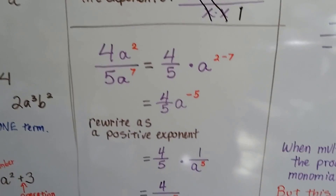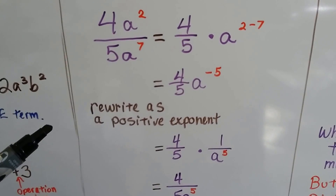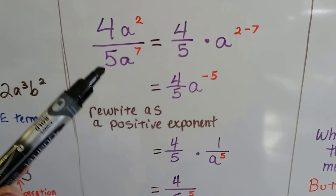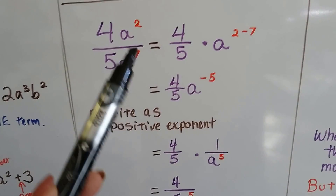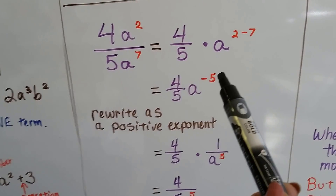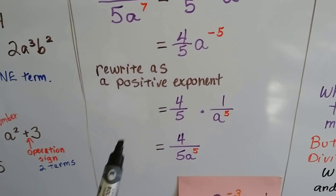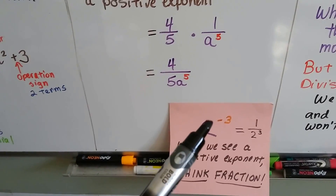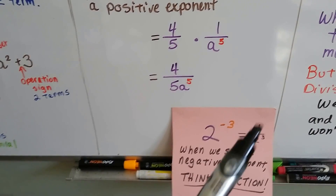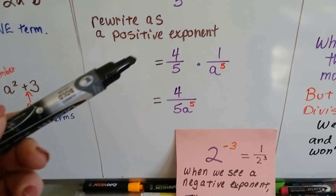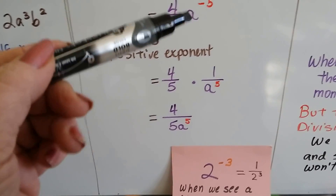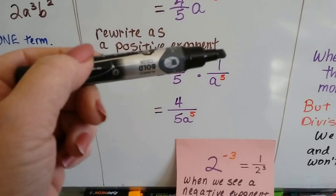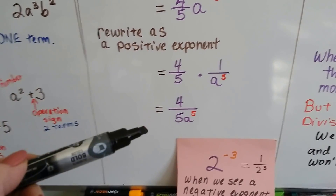We can even rewrite a negative exponent as a positive exponent. Here we've got 4a to the second power divided by 5a to the seventh power. We separate the 4/5 as a fraction away from the a's, and we do the subtraction: two minus seven gives us negative five. To rewrite it as a positive exponent, we turn it around and make it one over a to the fifth. So we get 4/5 times 1 over a to the fifth. Four times one is four, five times a to the fifth is 5a to the fifth power — and now it's simplified.